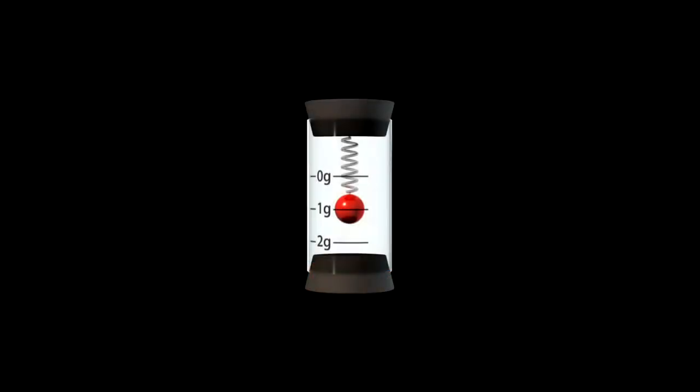They have two fundamental parts. A housing attached to the object whose acceleration we want to measure, and a mass that will tether to the housing can still move. Here it's a spring with a heavy metal ball.